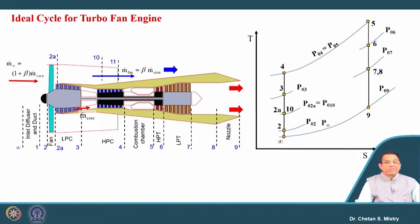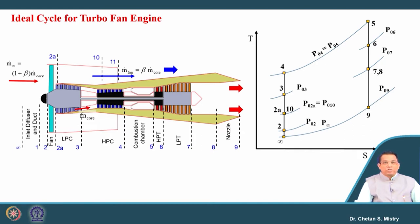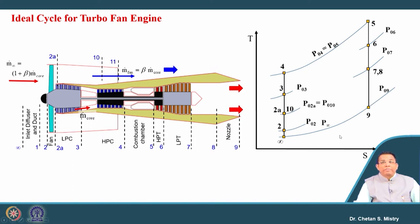Let us try to do some modification to achieve our expectations. We are looking for improvement of thermal efficiency, improvement of propulsive efficiency, improvement of overall efficiency, and lower specific fuel consumption. Let us target those one by one. To achieve higher thermal efficiency, we need a higher turbine entry temperature, and for higher thrust we also need higher turbine entry temperature. We have also discussed higher overall pressure ratio configurations.